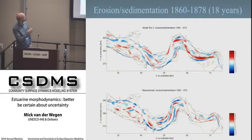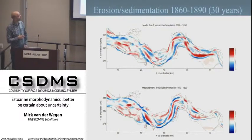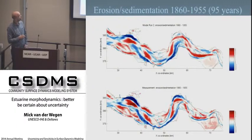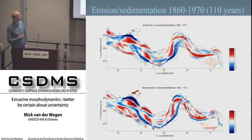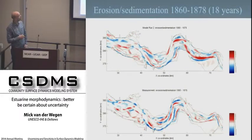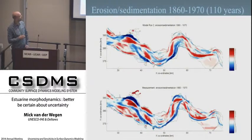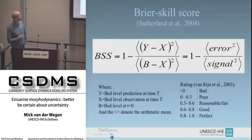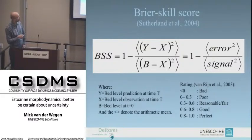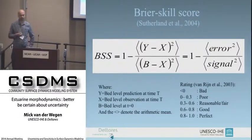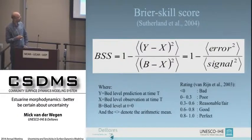Here you can see the modeled patterns and the measured patterns after 18 years, 30 years, 45 years, 71 years, 95 years, 100 years, and 110 years. In the beginning it doesn't look good — there are some similarities — but if you continue, you can see striking similarities. We can translate that into a Brier Skill Score: if it's 1, it's perfect; if it's 0, you are as good as your initial conditions; and if it's below 0, you should not have started your modeling effort at all.